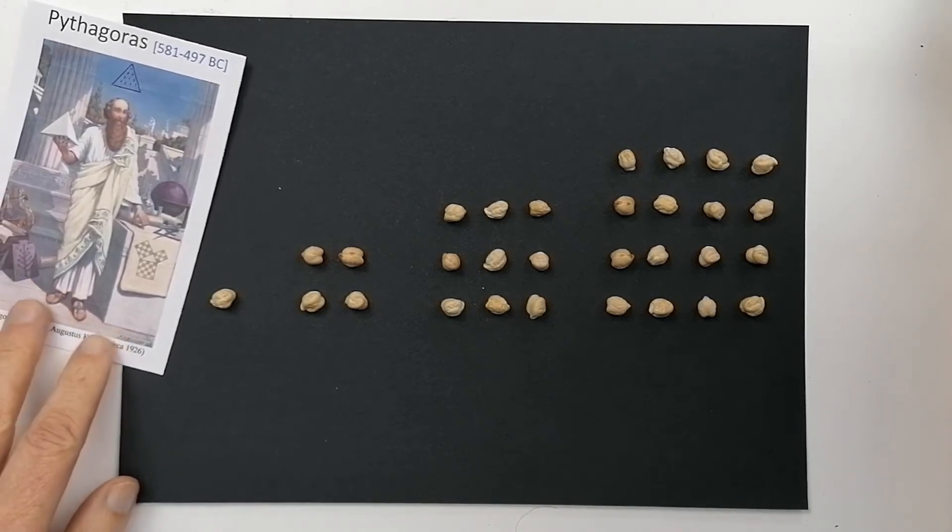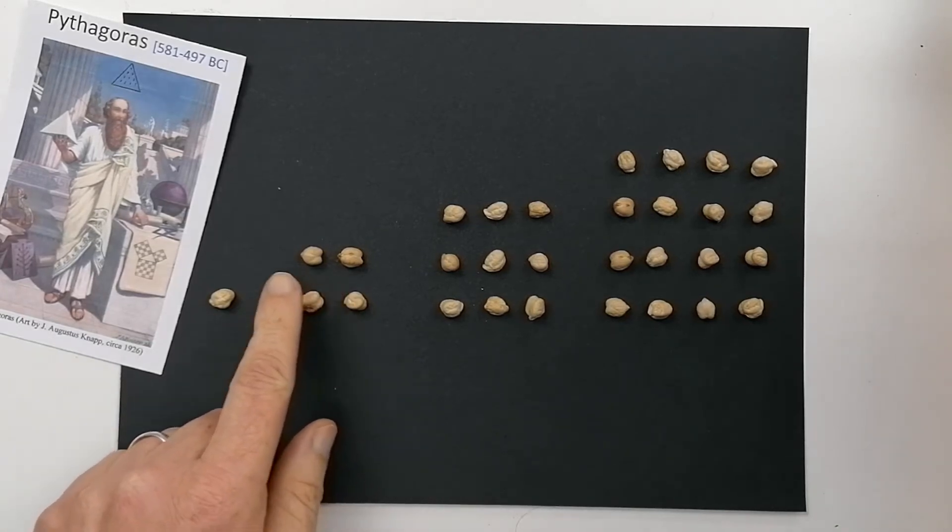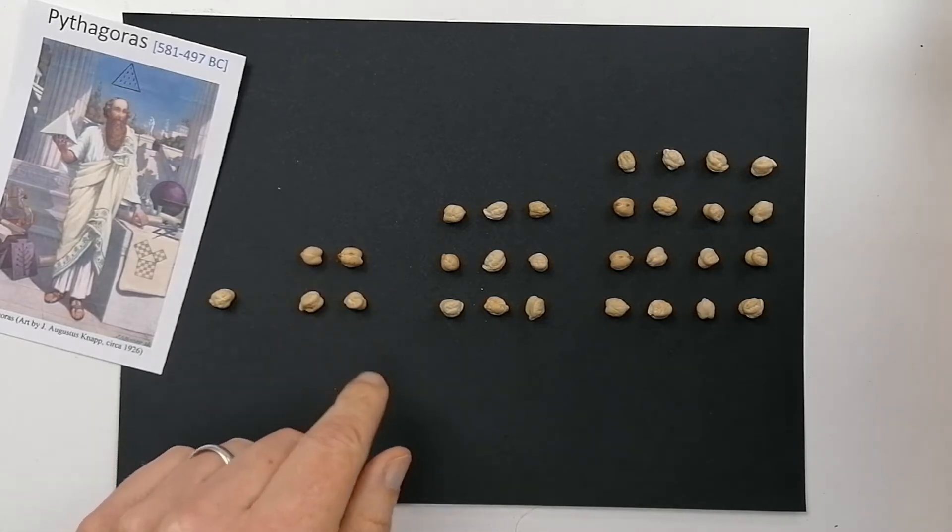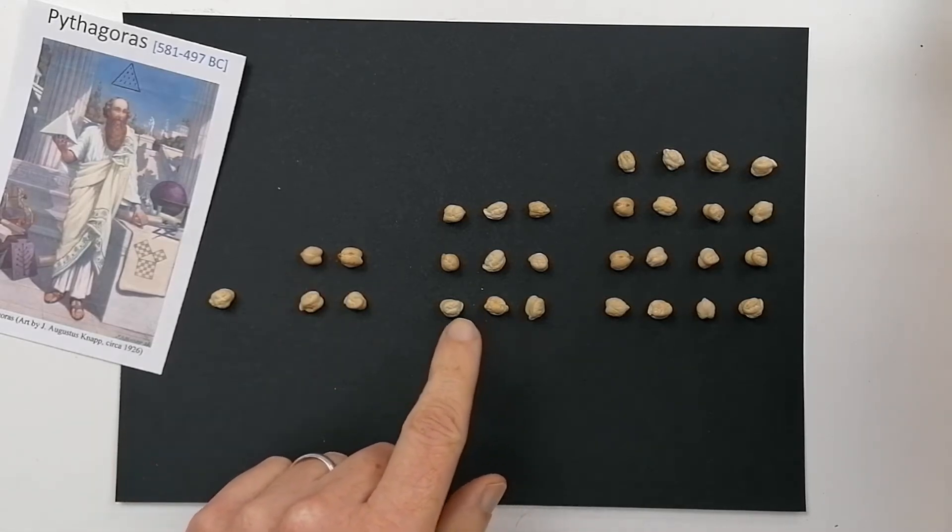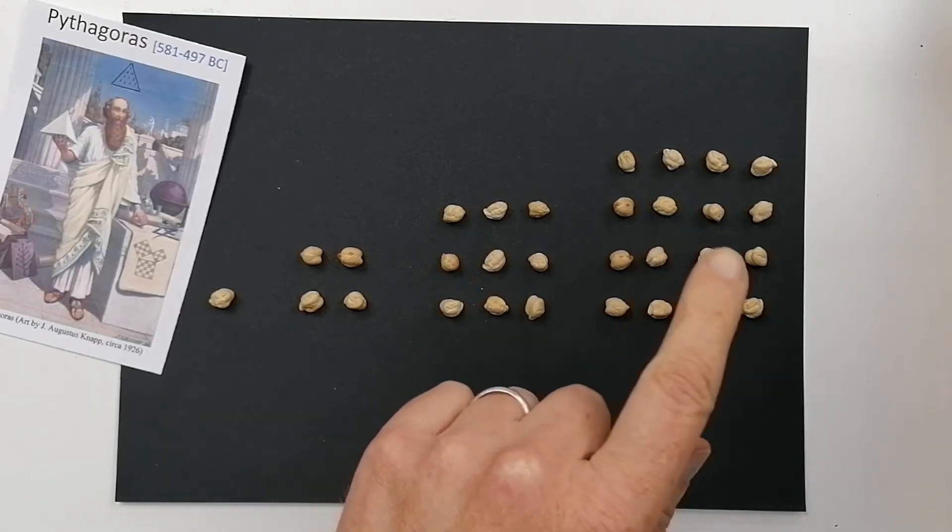So let's take a look at what are called the square numbers. So what we have here is one, and then if you have two at the bottom, to make it a square number, you need to have two at the top as well. So two by two. If you have three at the base to make it square, you need three by three. And if you have four at the bottom, you need four by four.